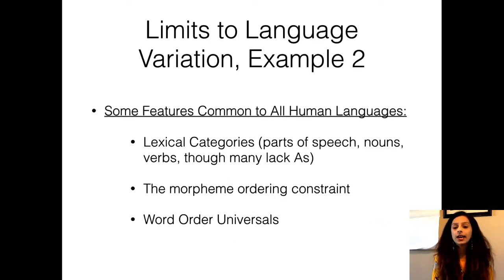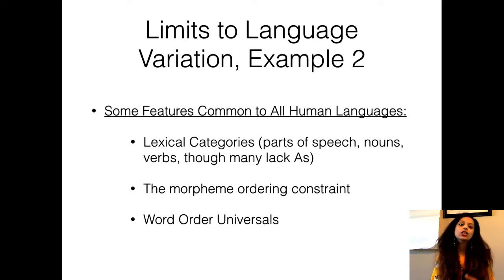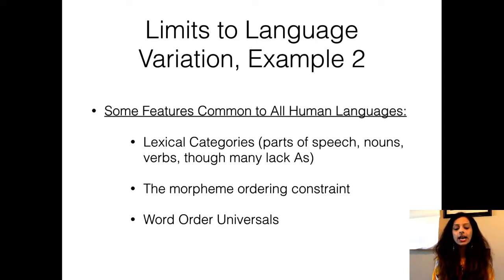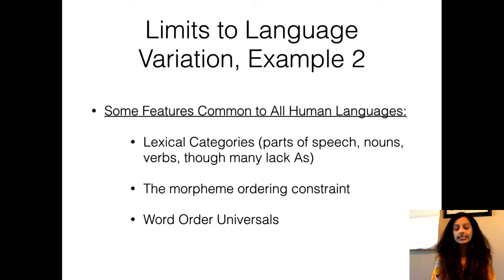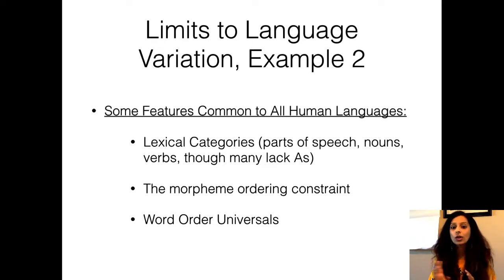The second thing common to all human languages includes lexical categories, also called parts of speech, something we will talk more about when we get into morphology and syntax. The parts of speech that English has are nouns, verbs, adjectives, adverbs, prepositions, etc. These are supposed to be linguistic universals — existing throughout languages. Many languages may actually lack adjectives, but that is a controversial topic. There are also other features such as the morpheme order constraint we saw with respect to the first evidence for universal grammar.